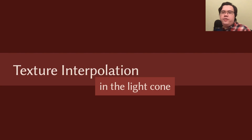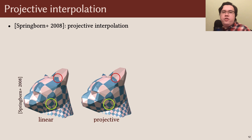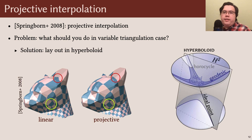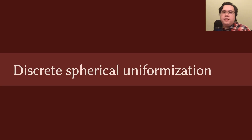Next, I'll discuss our interpolation scheme. In 2008, Springboard and colleagues showed that in the fixed triangulation setting, you can get smoother maps by performing what's called projective interpolation rather than standard linear interpolation. However, it's not obvious how to perform this projective interpolation across several triangulations. We introduce a new algorithm for variable triangulation projective interpolation by interpolating in the hyperboloid model of hyperbolic space.